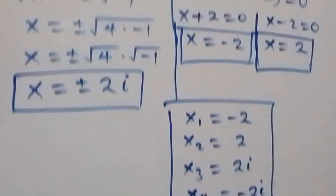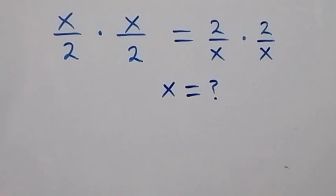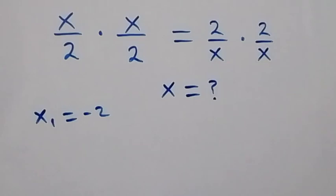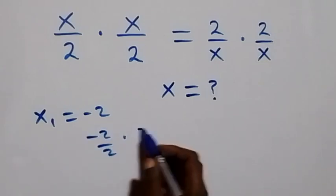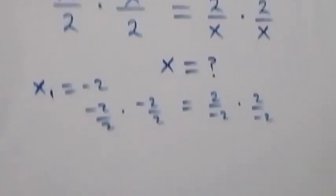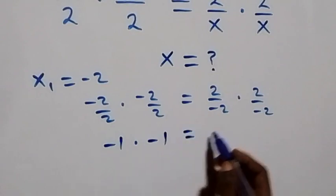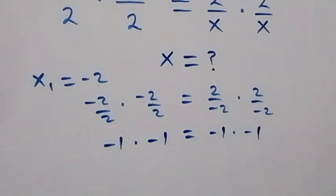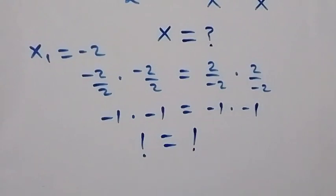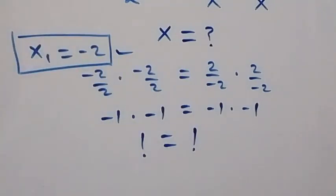Now we substitute each solution back to verify. For x equals minus 2, substituting gives us minus one times minus one on the left, and minus one times minus one on the right. Since minus one times minus one equals one on both sides, the left hand side equals the right hand side, so x equals minus 2 satisfies the equation.